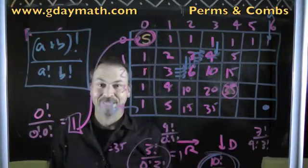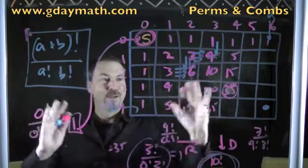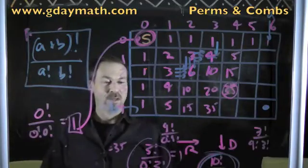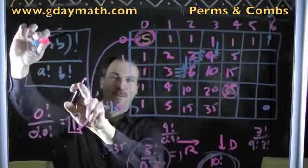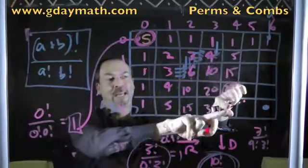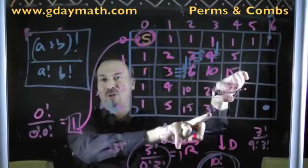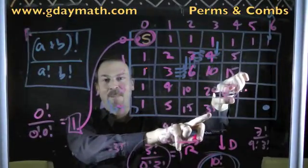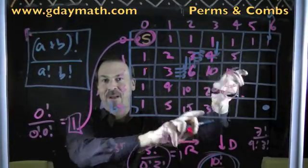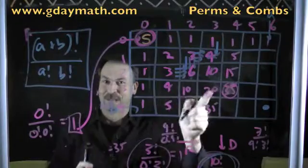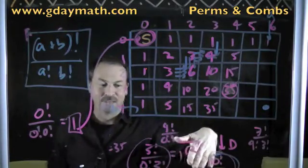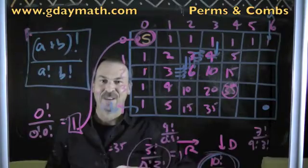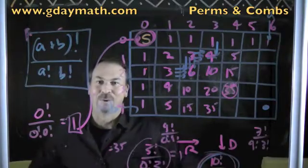So there's a lovely grid of numbers with lovely algebraic properties — a formula for each cell — and lovely geometric properties: each cell is the sum of the two numbers just above and to the left of it. Let's play with this some more in the next lessons. Look at the text below this video, have some fun with this, and we'll keep going.